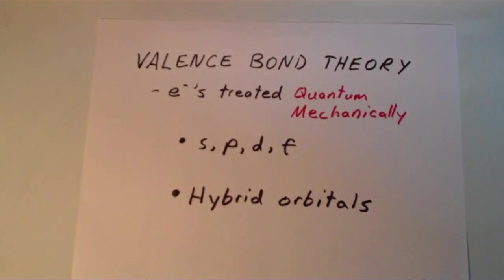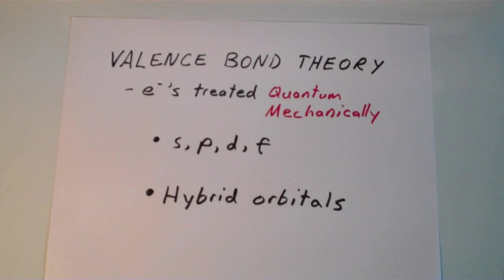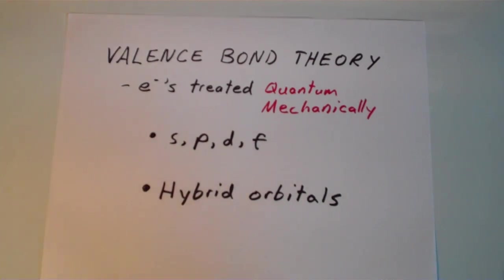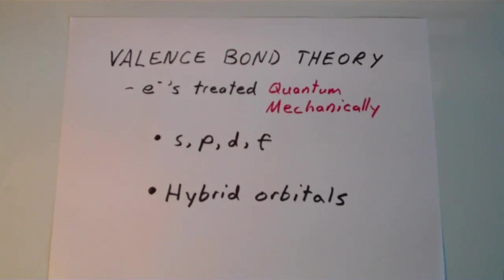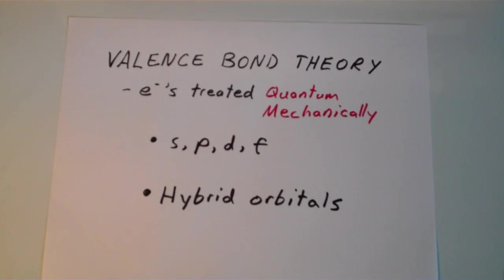So before I get any further with valence bond theory, I'd like to just talk about the origin or the driving force behind bonding in general. So suppose I have two atoms, like say two hydrogen atoms, and they are bonded together. Basically, what's going on there? You have the electron cloud and the nucleus of one atom interacting with the electron cloud and the nucleus of the other atom. And if you were to map out the potential energy of those interactions as a function of the distance between the two atoms, then you would get a curve that looks something like this.